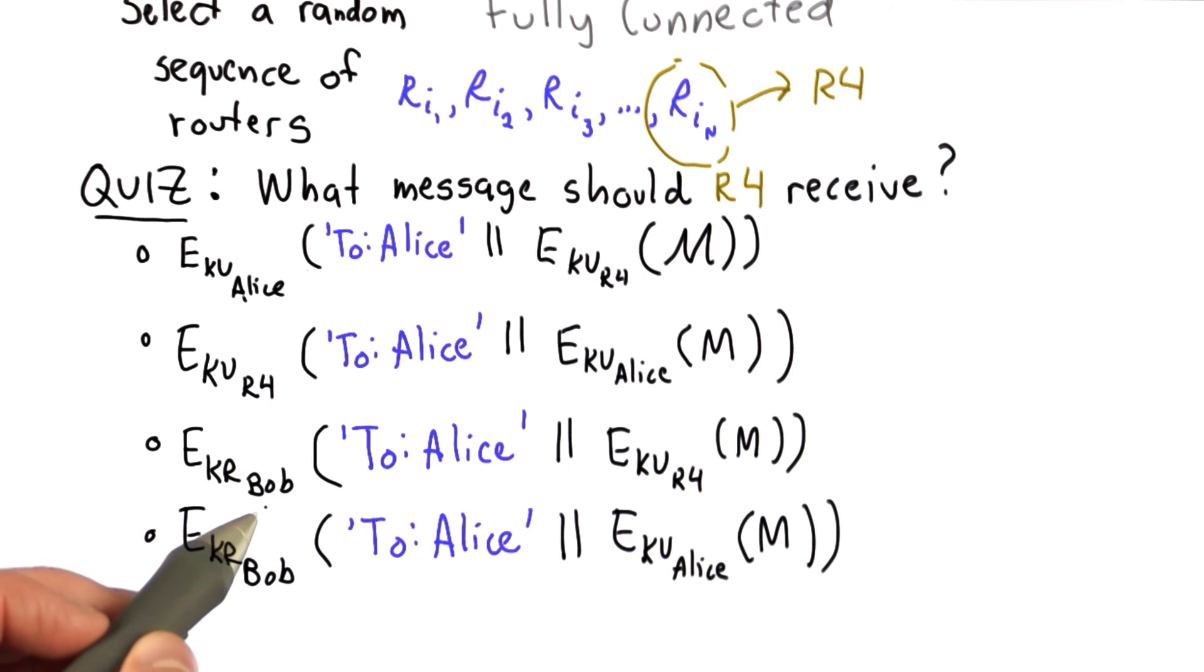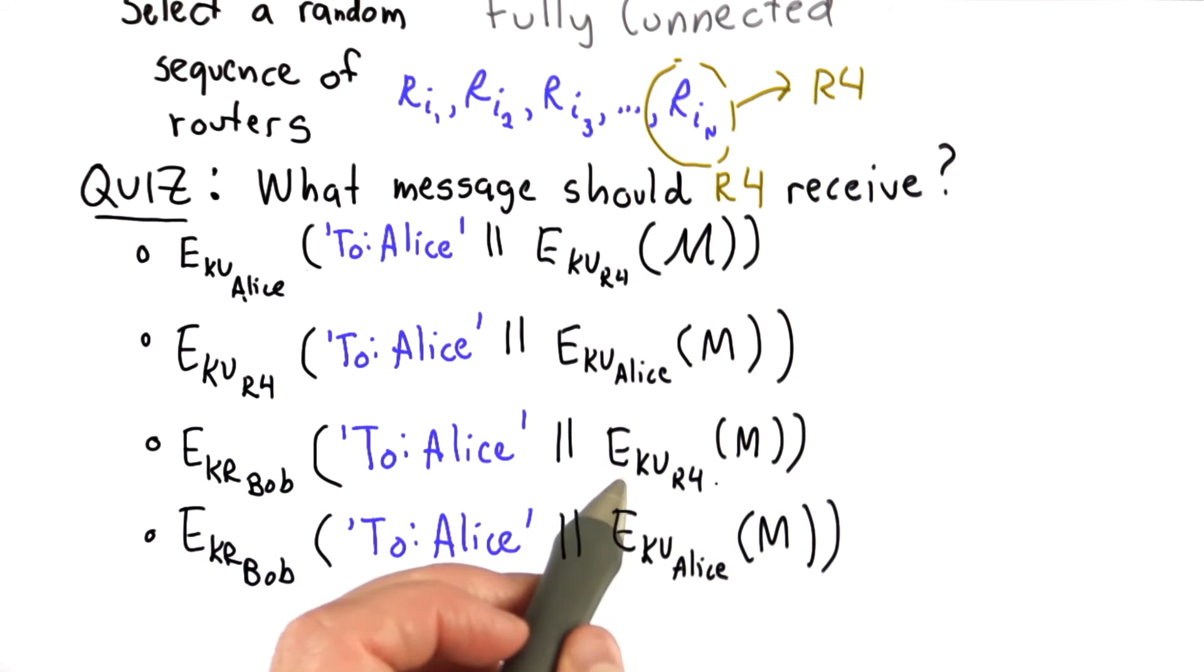Encrypted using the private key of Bob, the message to Alice, concatenated with the message encrypted with the public key of R4, or the message to Alice concatenated with the message encrypted with the public key of Alice, all encrypted with the private key of Bob.